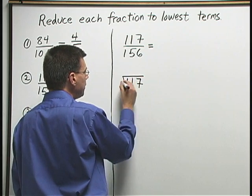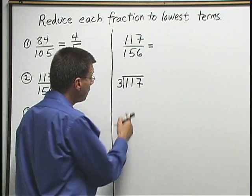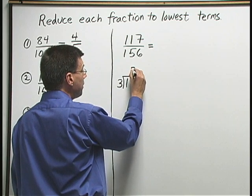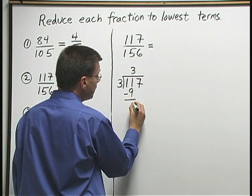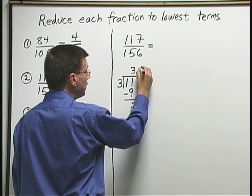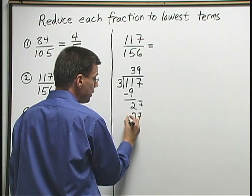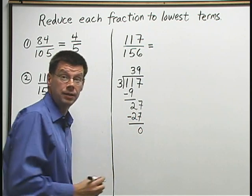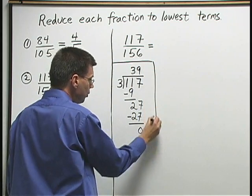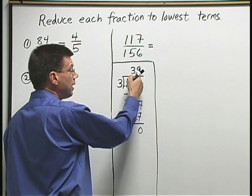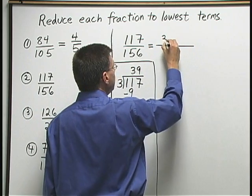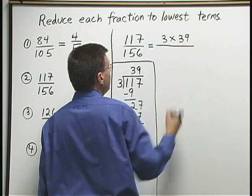Even if you don't know the trick, you can always just try and see if 3 will go in. 3 goes into 11 three times. 3 times 3 is 9. 11 minus 9 is 2. Bring down the 7. 3 goes into 27 nine times. 9 times 3 is 27. 27 minus 27 is 0. So we got 3 going into 117 thirty-nine times. That means 3 times 39 is 117. We got that one broken down.